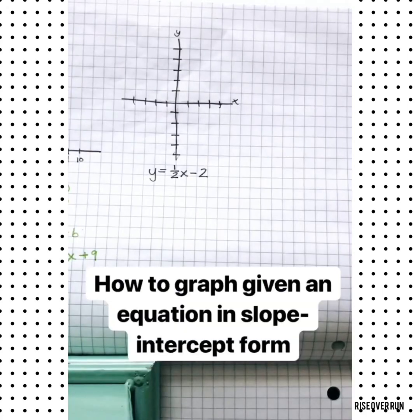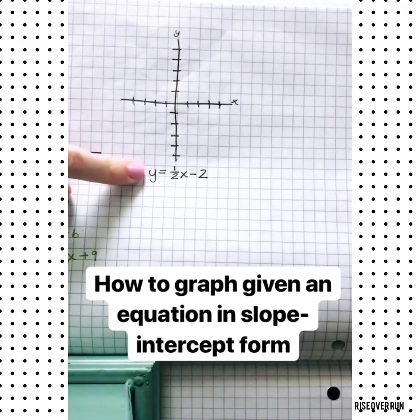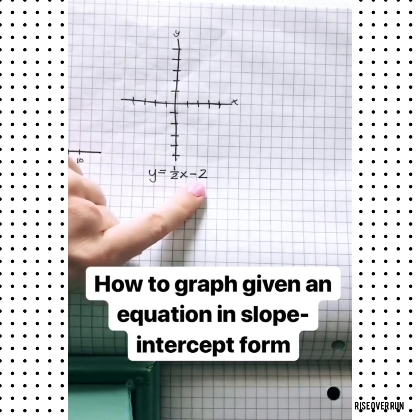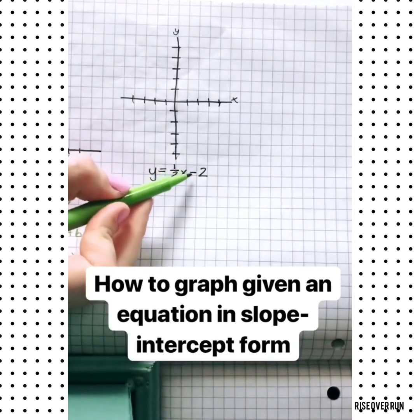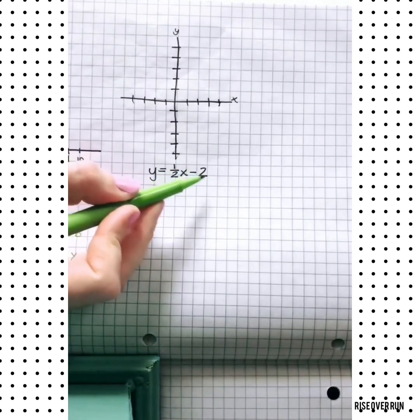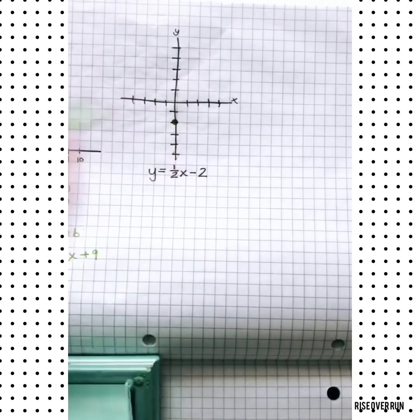All right, now let's graph a line when it's given to us in slope-intercept form. Here we have y equals 1½x minus 2. We always want to start looking for that constant, that's your initial value. Be sure you pay attention to the sign right before it, that's actually a negative 2. So we'll start on the y-axis with a point at negative 2.